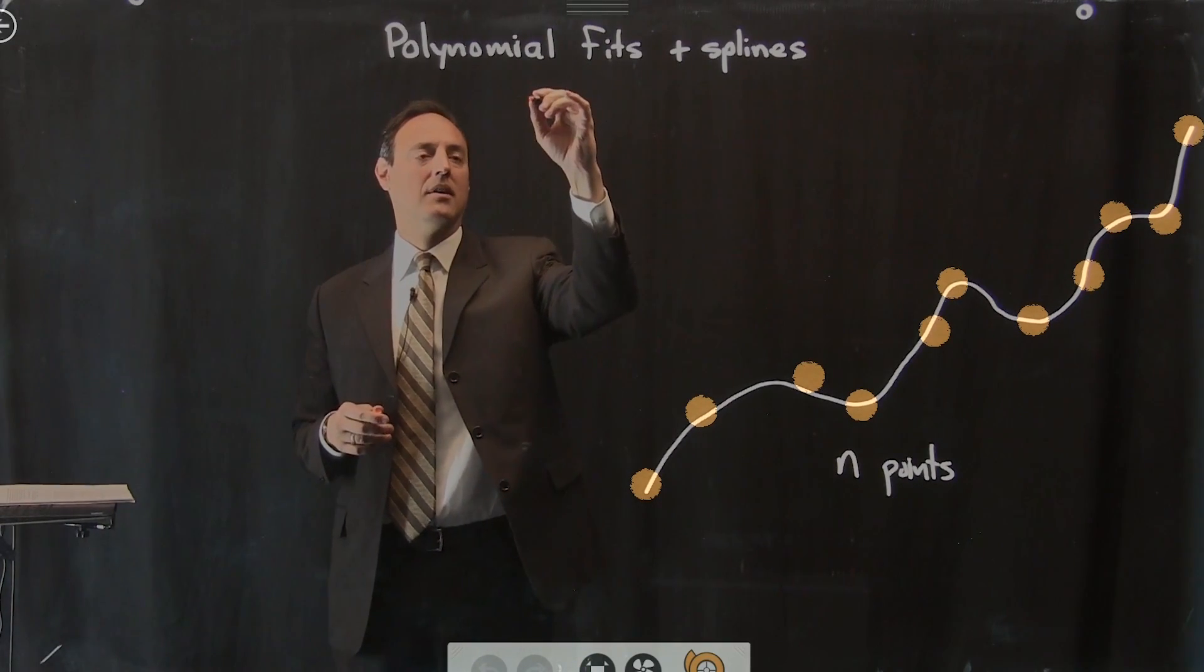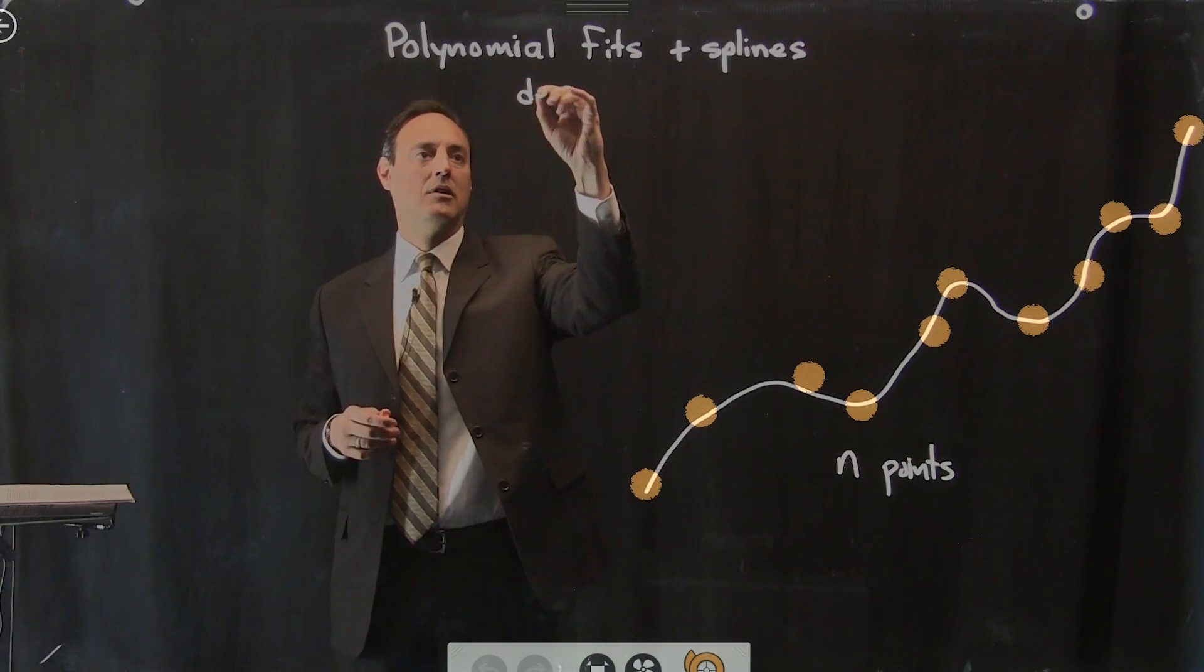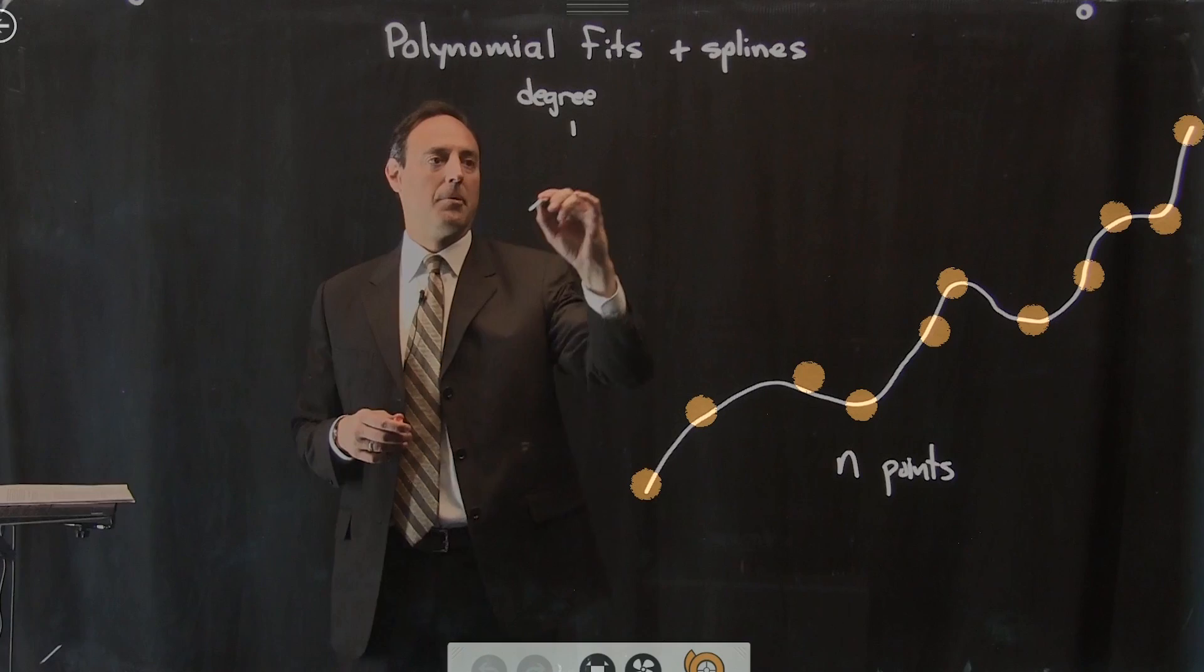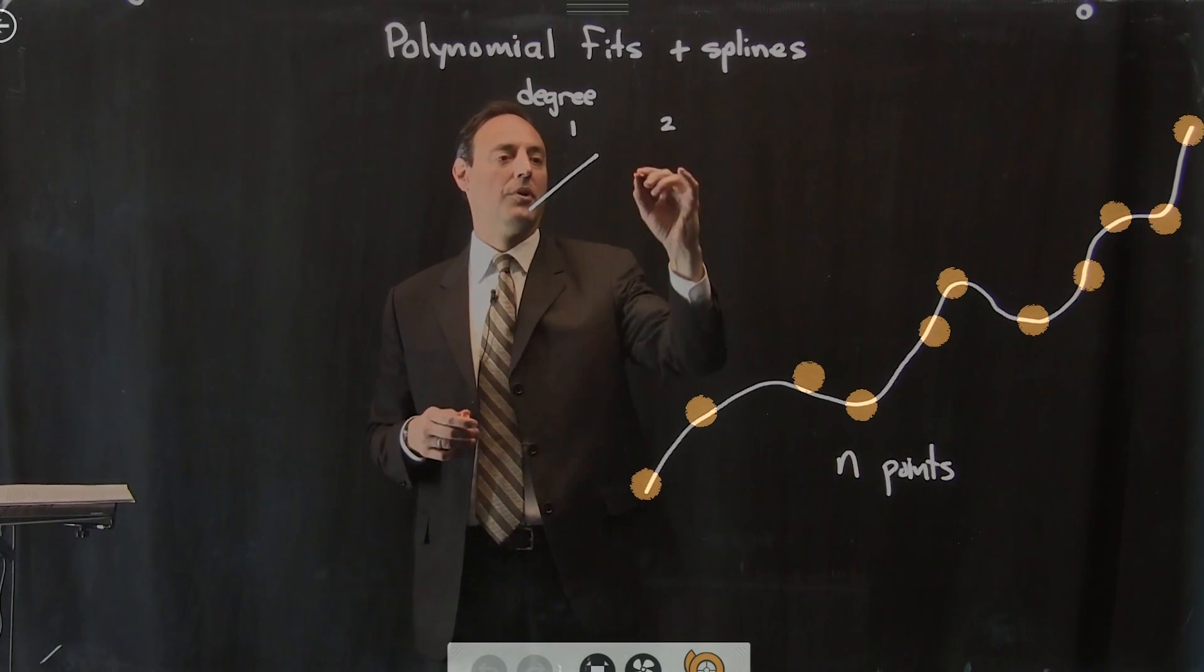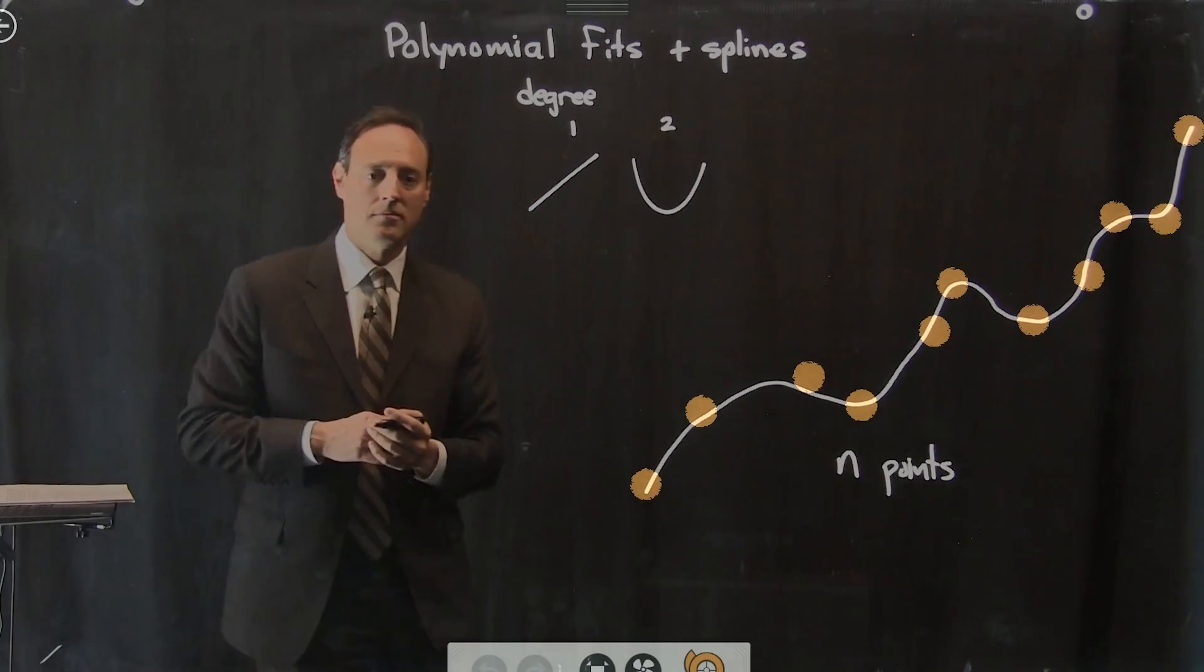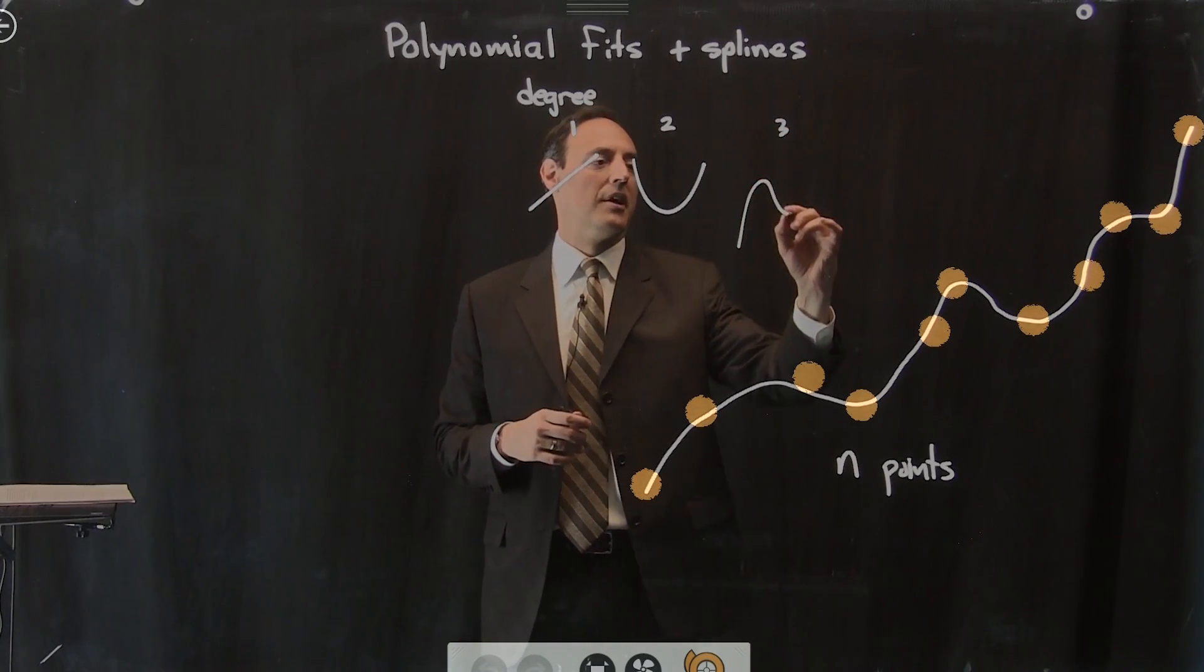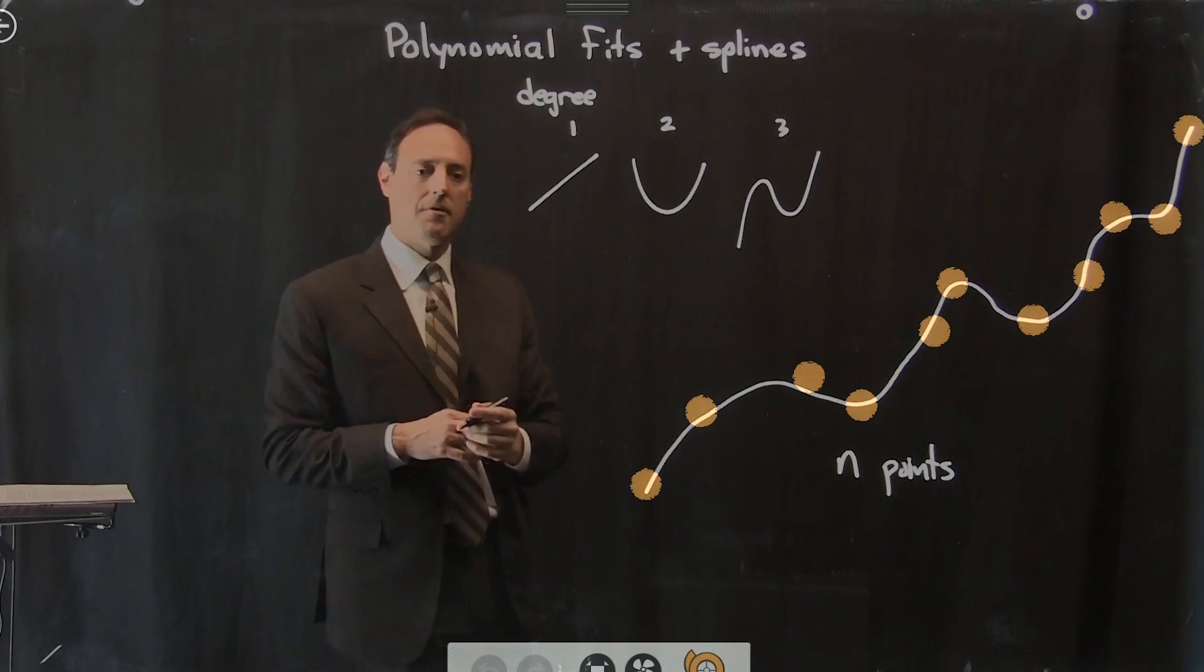So when I think about a polynomial degree, when I think of degree one, I think about a line. I think of degree two, I think about a parabola. When I think about degree three, then you're starting to get this cubic.